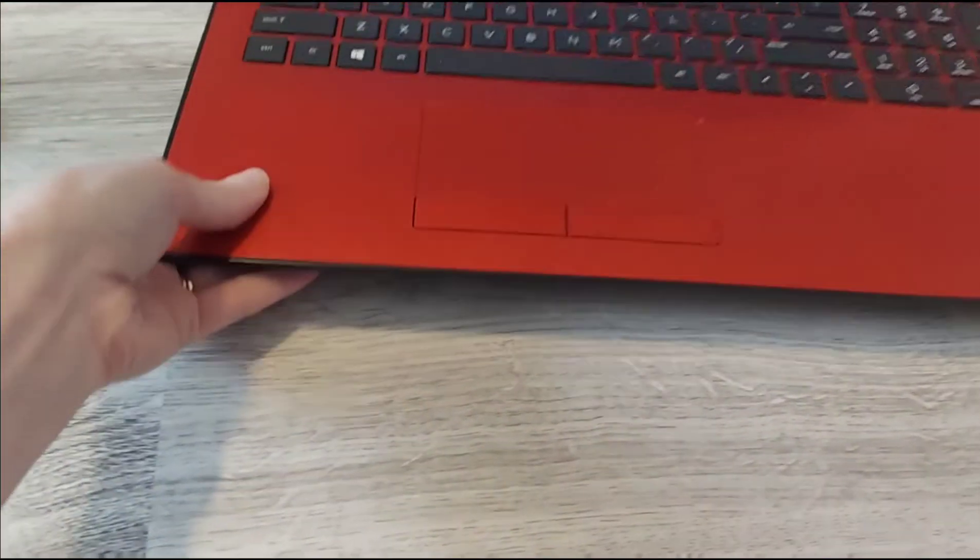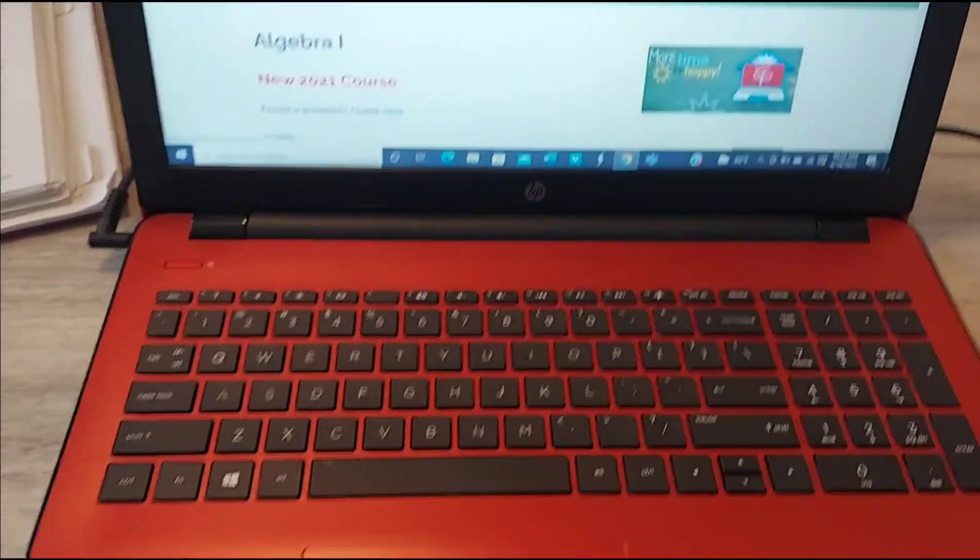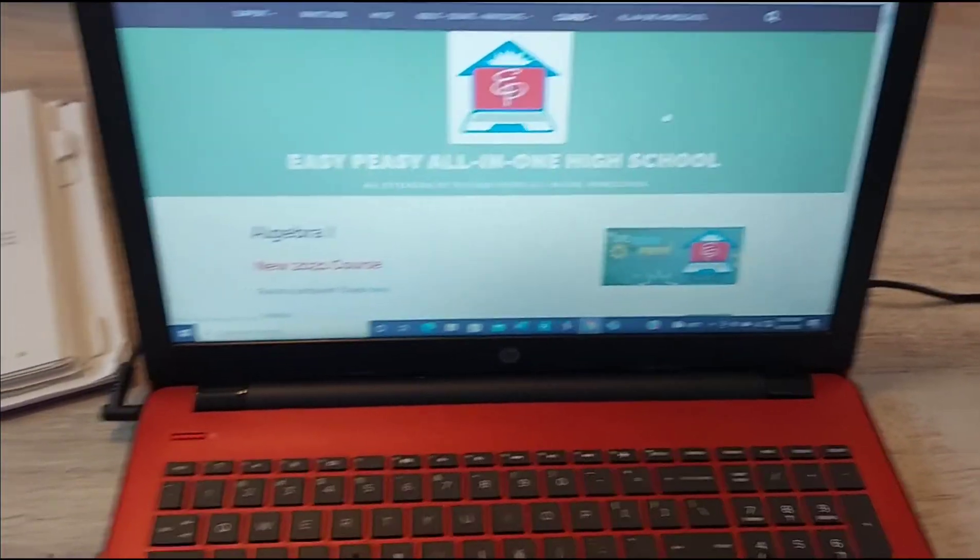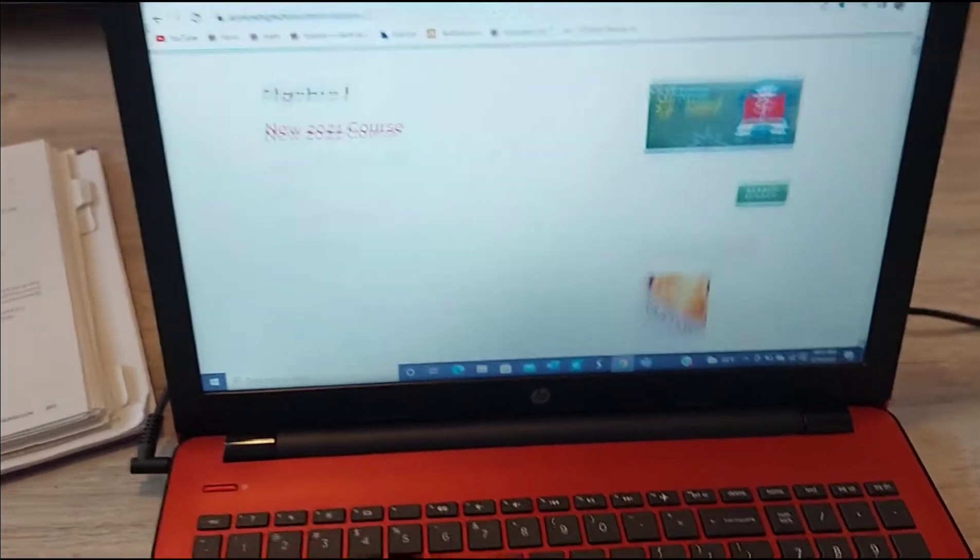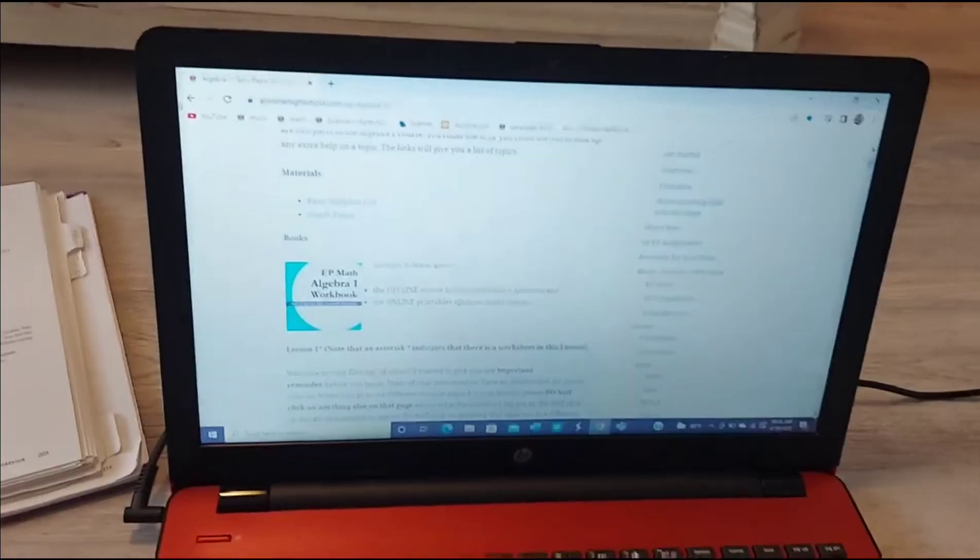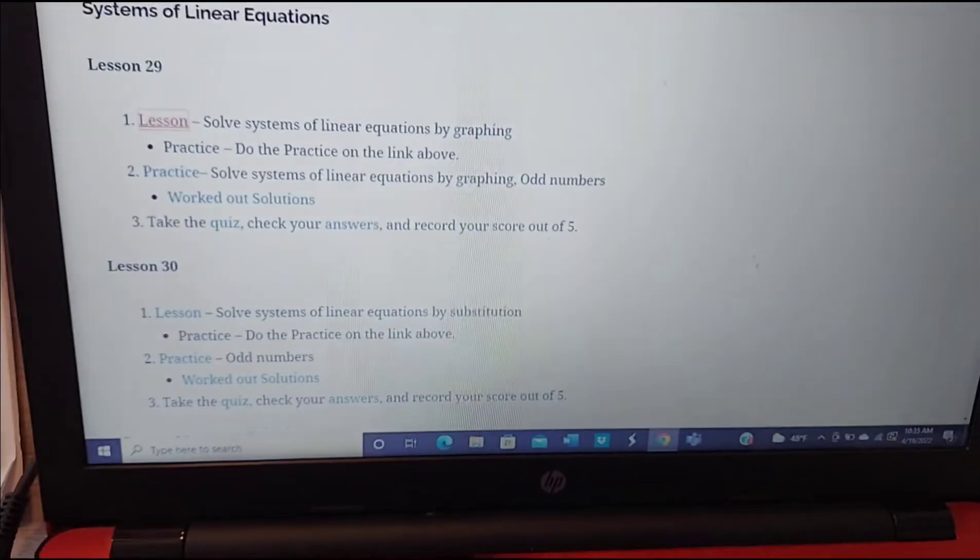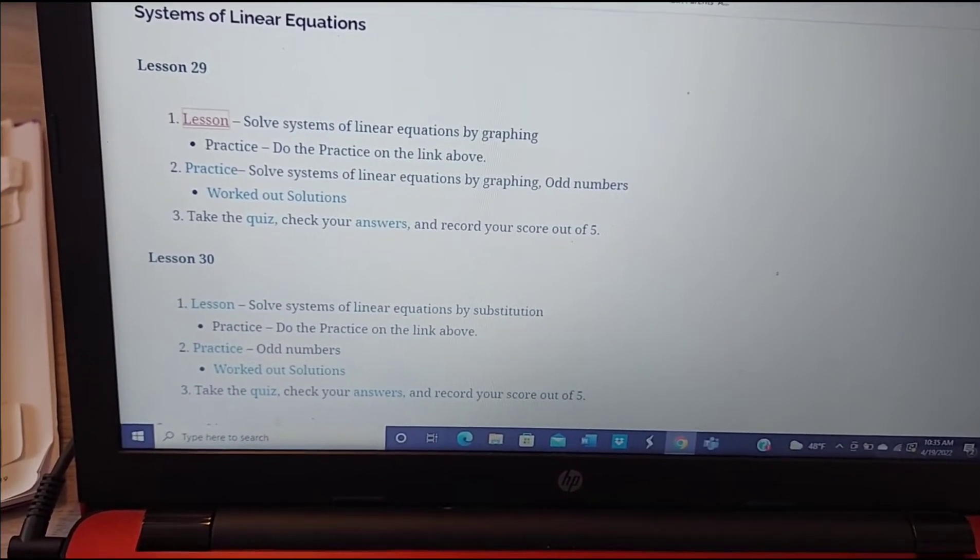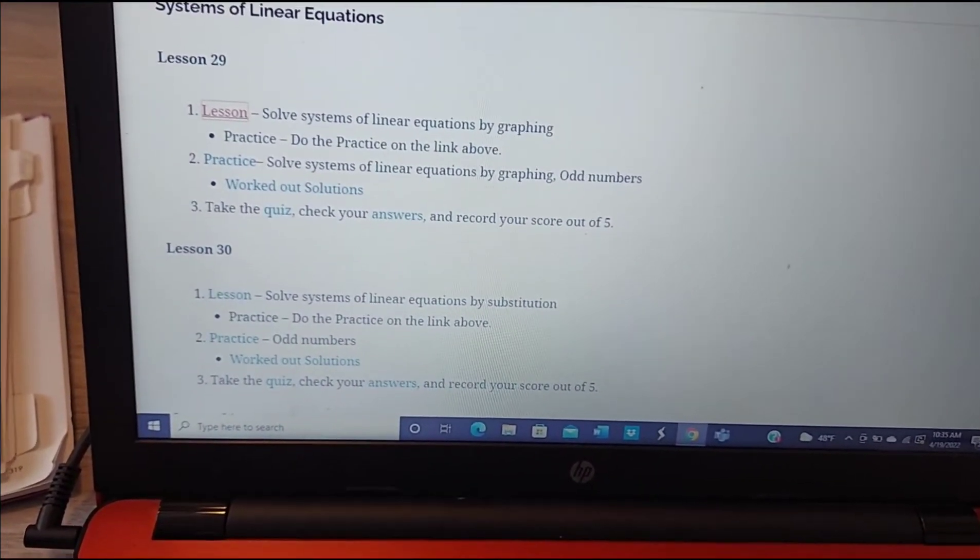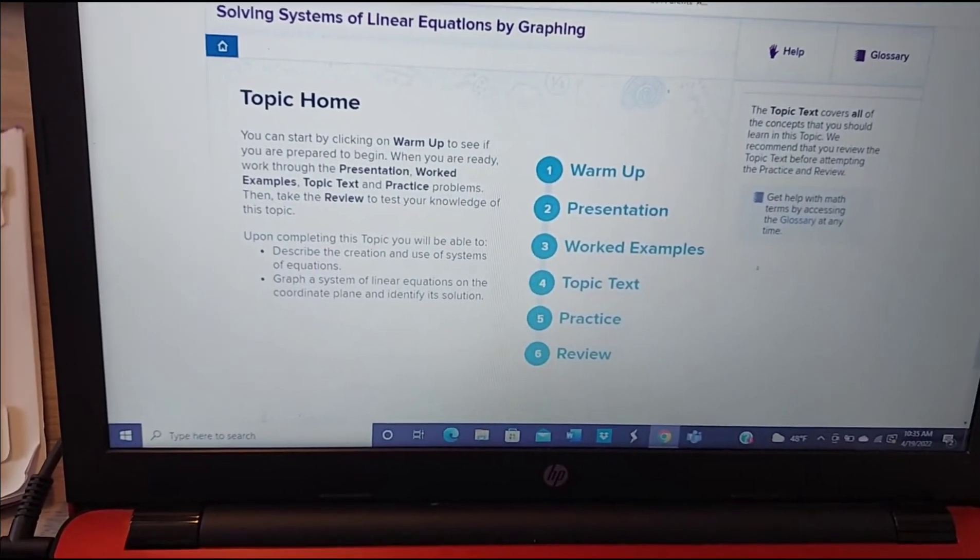And here is the online program. It's basically the same content as the offline program. And I use this a lot because of the helpful lectures that it has on it. Let me see if I can find one of the lectures. So this is lesson 29. You just have to click on the blue words to follow the link to the lesson. And the first link is the NROC webpage, which they use a lot for the presentations.